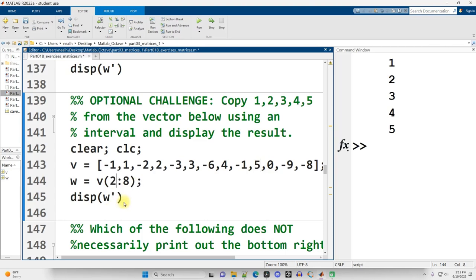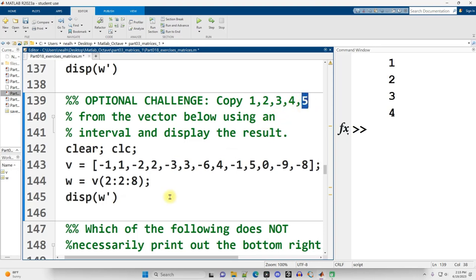So I missed the 5 there. So I needed to go up to 10. Of course, yeah, because 2 through 10. Cut those in half, you get 1 through 5. And there we go.